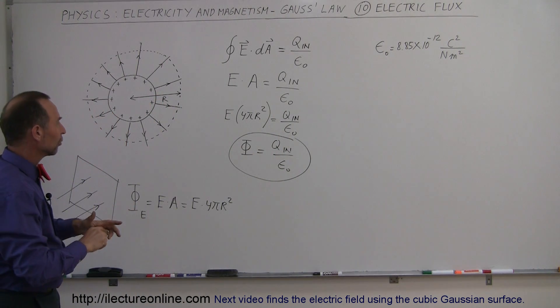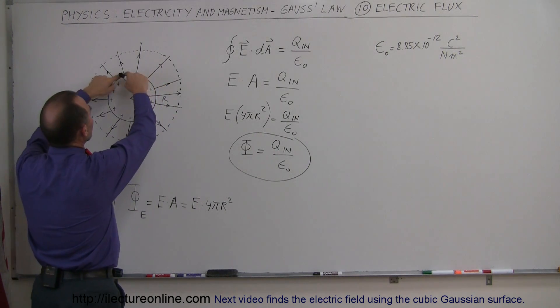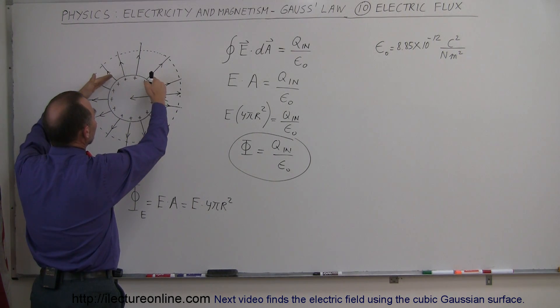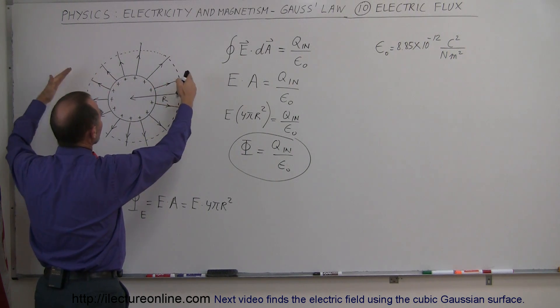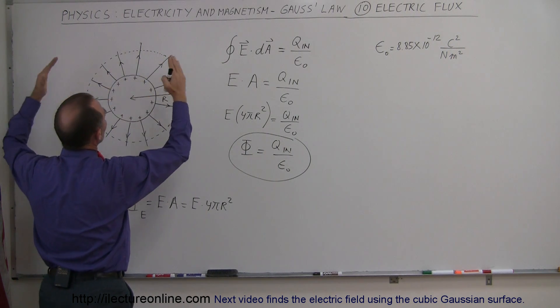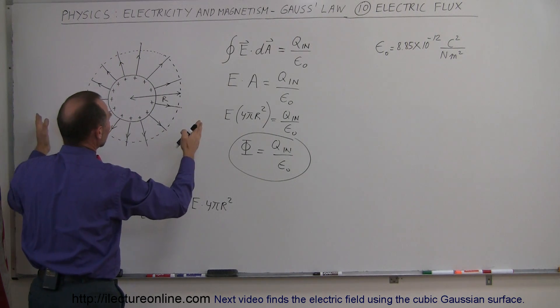Which makes sense, because we can see here that close by the electric field lines are much closer together, so therefore the field strength is greater, and as I go farther and farther out, there's a lot more surface area over which the electric field is distributed.